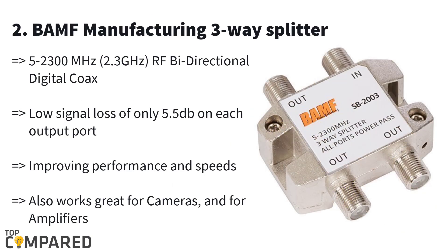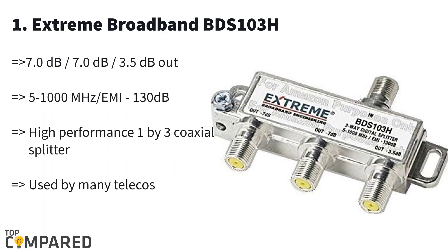Second on the list is the Banff Manufacturing three-way splitter. The cable splitter is ideal for a speed range of 5 to 2300 MHz. The splitter has an internal circuit for long life and efficient use. It is also designed so that all ports can pass power. The Banff Manufacturing splitter also features low signal loss.